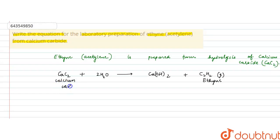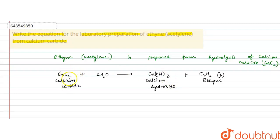This is calcium carbide reacting to form calcium hydroxide and ethyne. This is the chemical equation for the preparation of ethyne from calcium carbide.